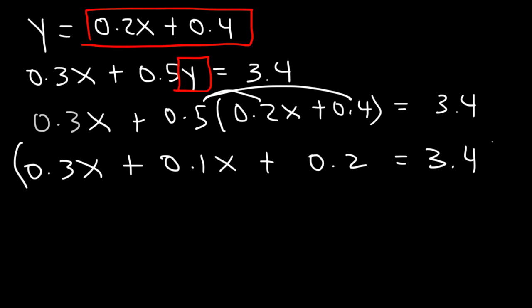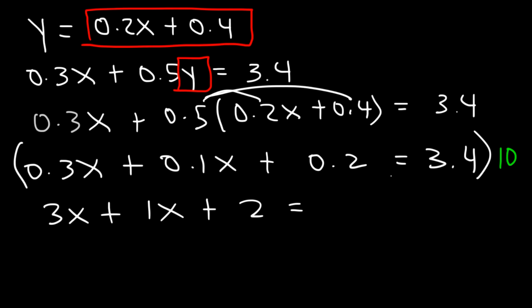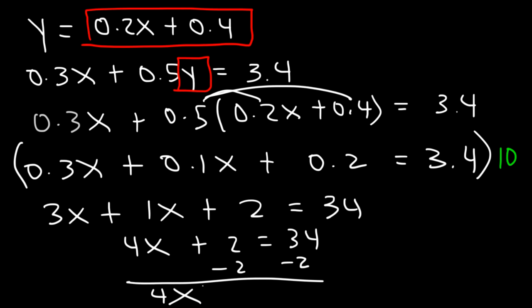What I like to do is get rid of the decimals. Because I have one digit to the right of the decimal for each number, I'm going to multiply everything by 10. If I had two digits to the right, I would multiply by 100. So 0.3x times 10 is 3x, 0.1x times 10 is 1x, 0.2 times 10 is 2, and 3.4 times 10 is 34. Now 3x plus x is 4x, and 34 minus 2 is 32. Dividing both sides by 4: 32 divided by 4 is 8, so x equals 8.